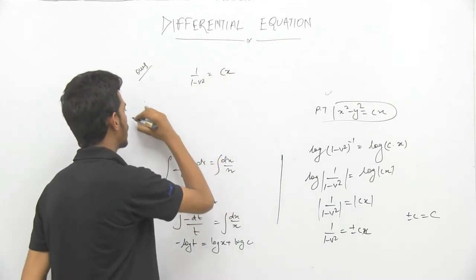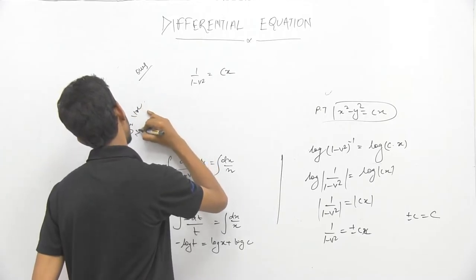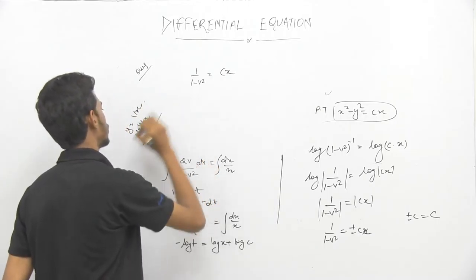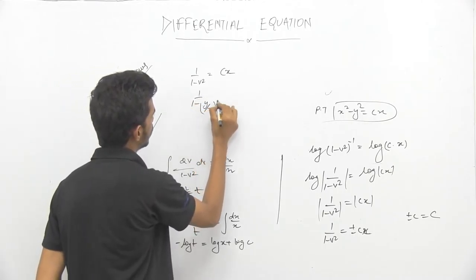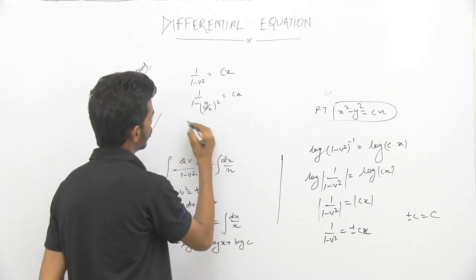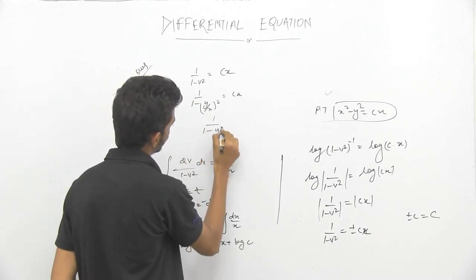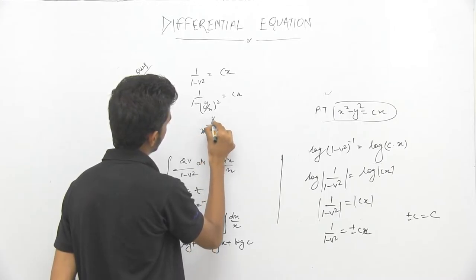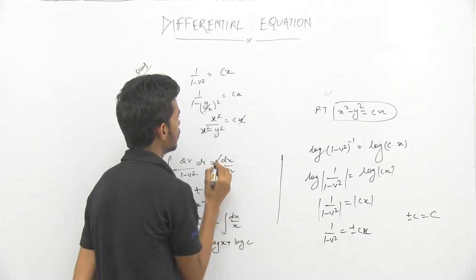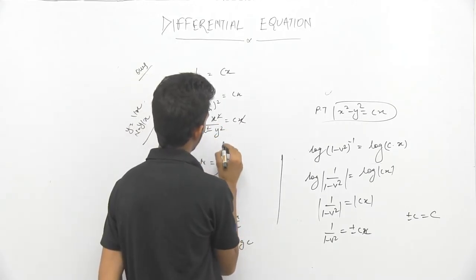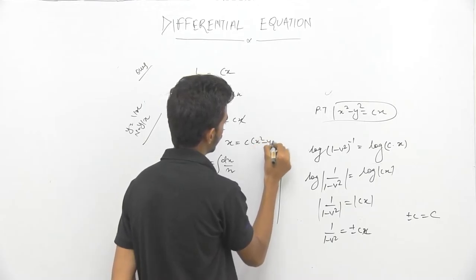Now v = y/x since y = vx. So substituting: 1/(1 - (y/x)²) = Cx, which becomes 1/((x² - y²)/x²) = Cx. This simplifies to x²/(x² - y²) = Cx, so x = C(x² - y²).